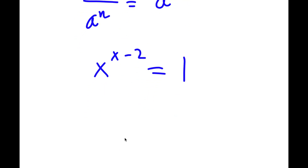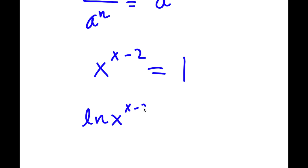Now, to solve this, if I take the natural log, or ln, on both sides, I get ln of x to the power of x minus 2 is equal to ln 1.